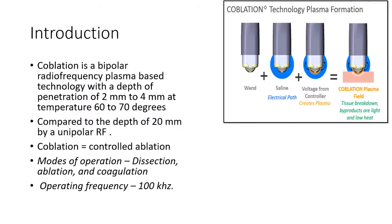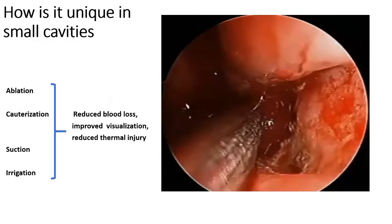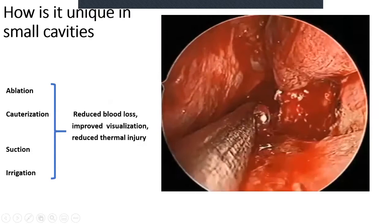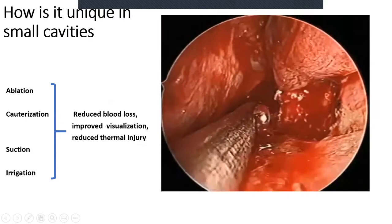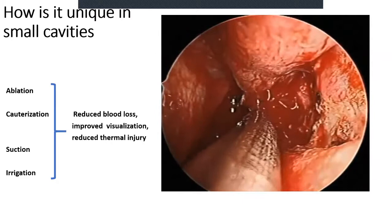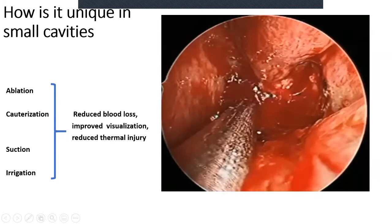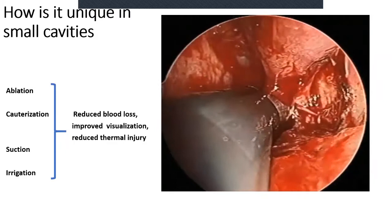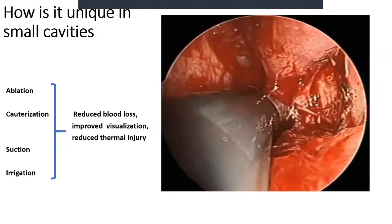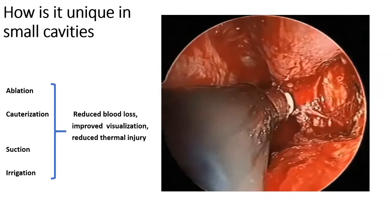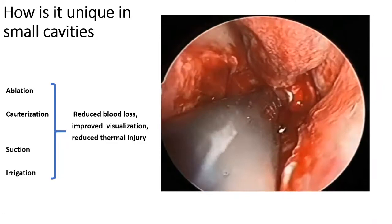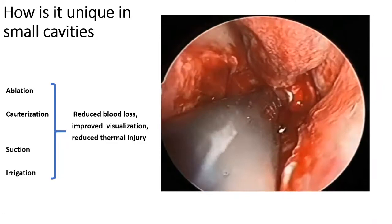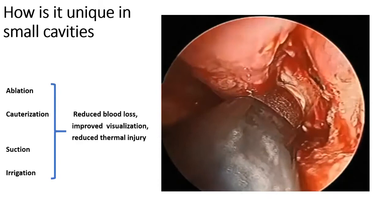Why is coblation important in small cavities? This is a video of a sphenopalatine artery bleed — a call most of us get from the emergency room. The reason coblation works so well in these small scenarios is that coblation is actually a four-in-one weapon: it can ablate, coagulate, suction, and irrigate.